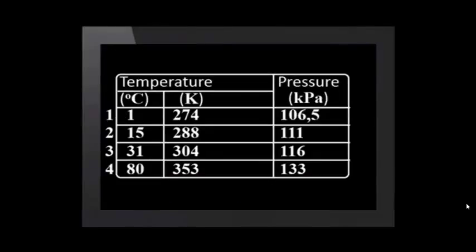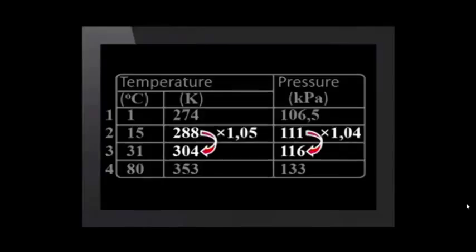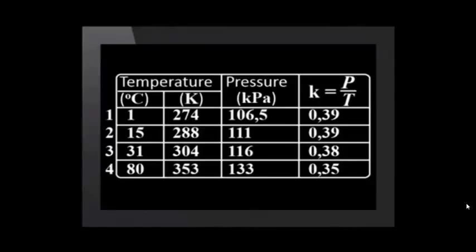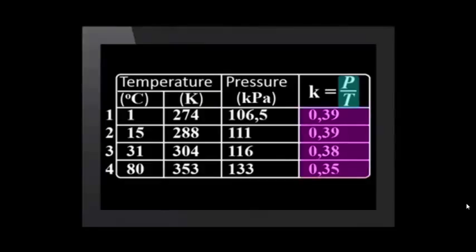Let's go back to the real data Mr. Mashapa's learners got. Remember that when we looked at the patterns in the data, we saw that there was some experimental error. Another way to see this is to calculate P over T for their data. The answers are similar but not identical for the different states. A bit of experimental error is normal in real data.